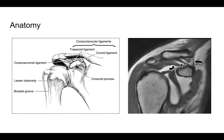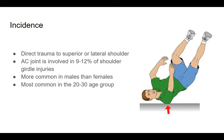Brief anatomy: the AC joint is composed of the clavicle, acromion, and coracoid. The main static stabilizers are ligaments: the coracoacromial ligament contributes primarily to horizontal stability; the AC ligament contributes to anterior and posterior stability; the coracoclavicular ligaments — including the trapezoid and conoid ligaments — contribute to vertical stability and are the most important to reconstruct. The deltoid and trapezius muscles contribute to dynamic stability via the deltopectoral fascia.